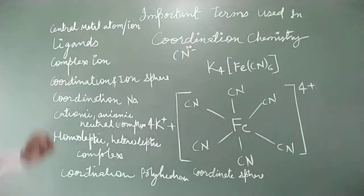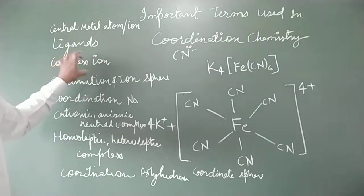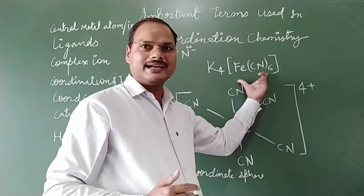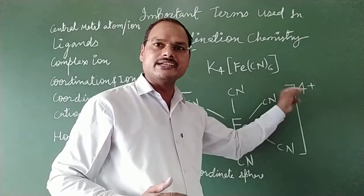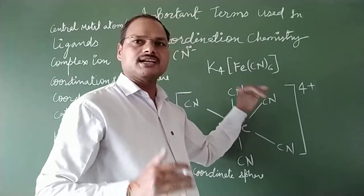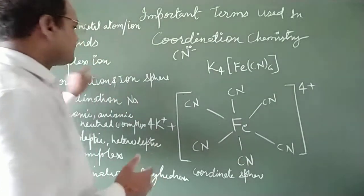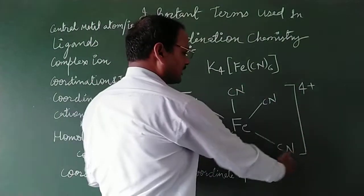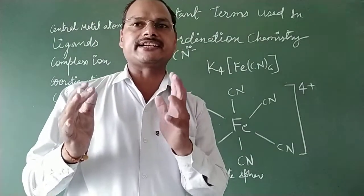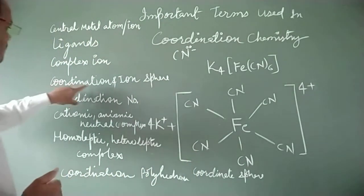The next term is complex ion. The complex ion means the part of the compound which is written within the square bracket. It may be positively charged, neutral, or negatively charged depending on the conditions. This part is ionic in nature and is therefore known as the ionic complex.